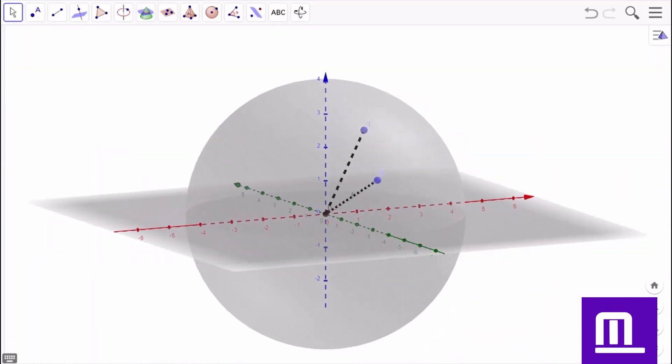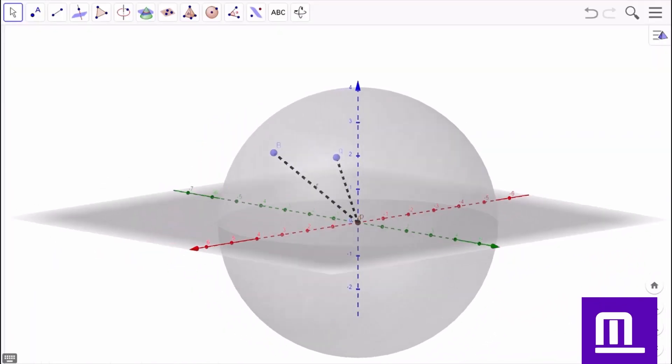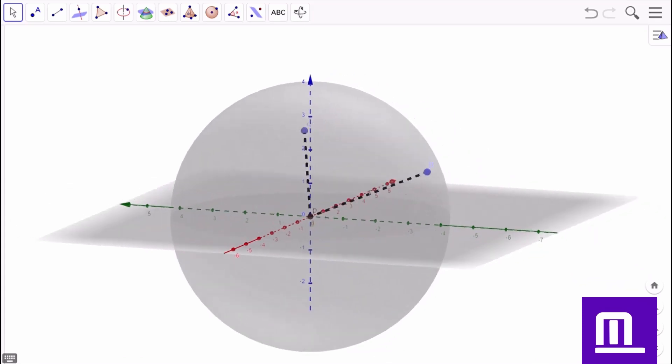Similarly, with the same metric, we can construct n of p comma r, and that will be a sphere of radius r and center p.